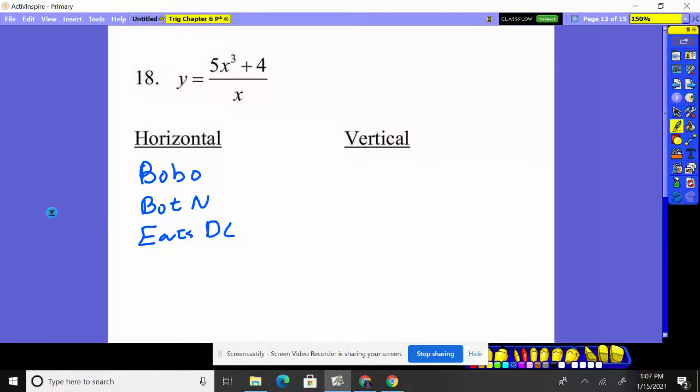Either it's bigger on the bottom or bigger on the top, or the exponents are the same. In this case, you have a third power and a first, so it's bigger on top. That means we're looking at botten, bigger on top, N means none. There is not a horizontal asymptote with this problem.